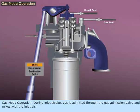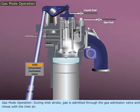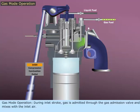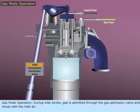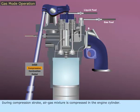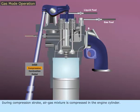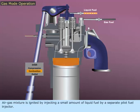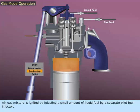Gas Mode Operation: During the inlet stroke, gas is admitted through the gas admission valve and mixes with the inlet air. During the compression stroke, the air-gas mixture is compressed in the engine cylinder. The air-gas mixture is then ignited by injecting a small amount of liquid fuel via a separate pilot fuel injector.